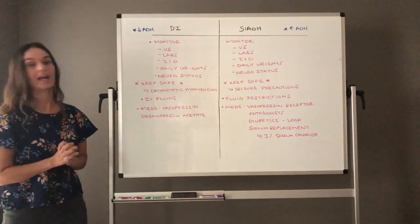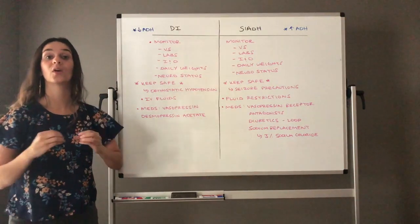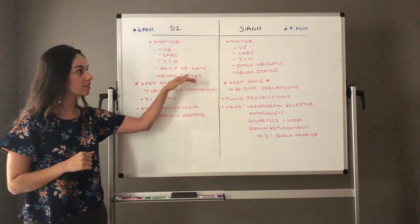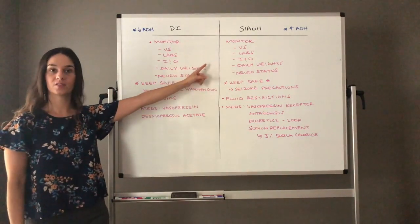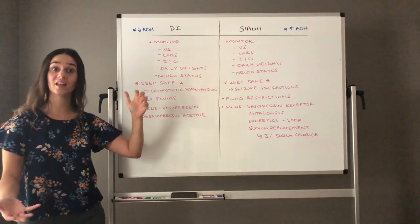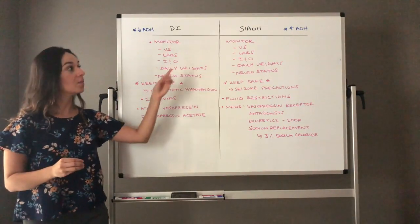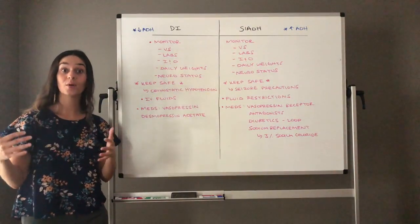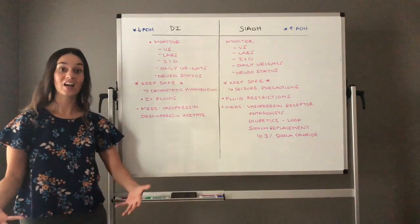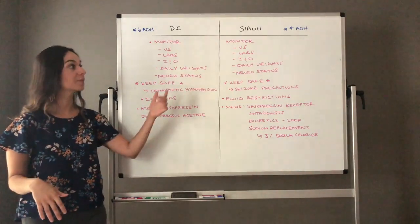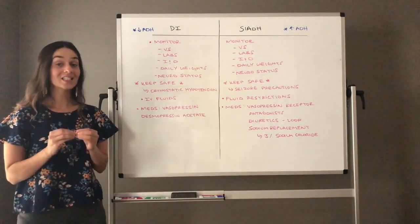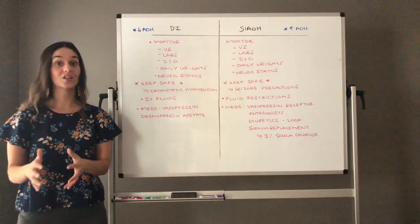On the opposite end, SIADH. Again, you're thinking of fluid volume overload client that has way too much ADH levels. So very similar. Do you see how similar this is? You need to monitor vital signs. They're hypertensive. They're tachycardic. When we give treatment, such as the meds we're going to talk about in one second, we should see those vital signs start to regulate. Monitor their lab values. They are hyponatremic because the ADH levels have diluted their sodium levels. We need to monitor that. I's and O's. These clients are making scant amounts of urine, oliguria. We need to still ensure that they're getting 30 mLs per hour.